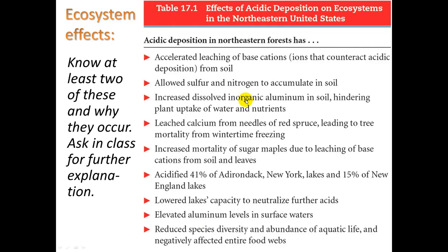It can also hinder the uptake of water and nutrients by plants in or near the water. Another problem is that good soil has important minerals that plants need. When acid rain falls, it can dissolve and carry away those minerals — it can do a really good job, in a bad way, of leaching important ions from the soil. So we see accelerated leaching of base cations, which you can think of as base minerals that are good for the soil to have.